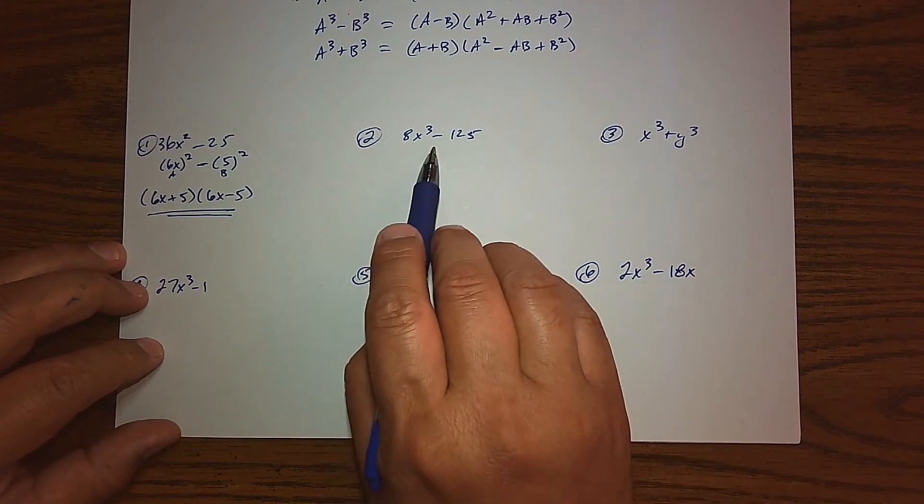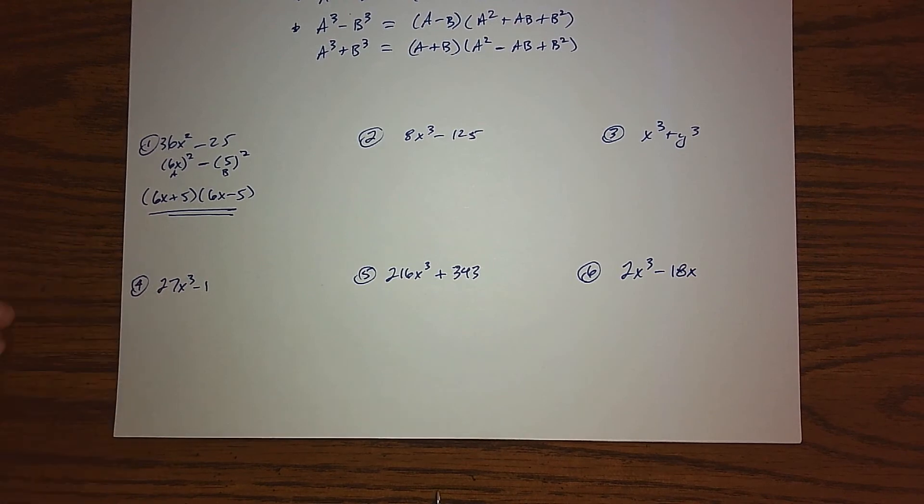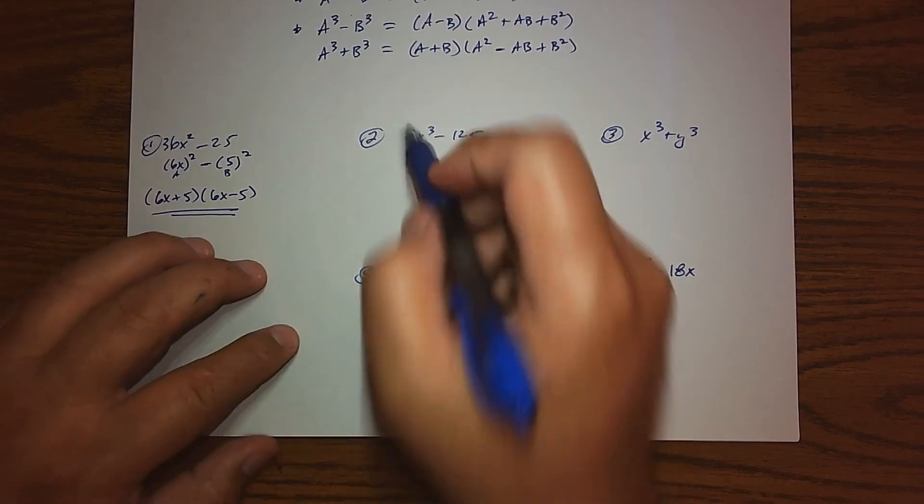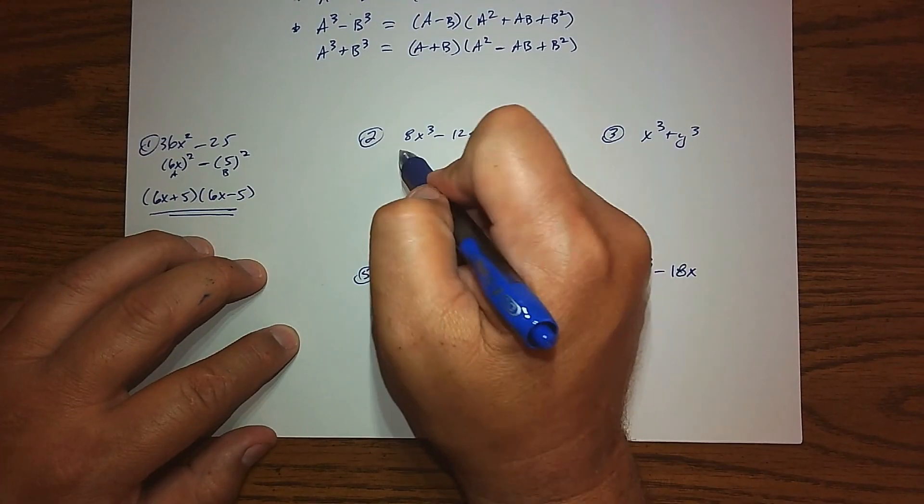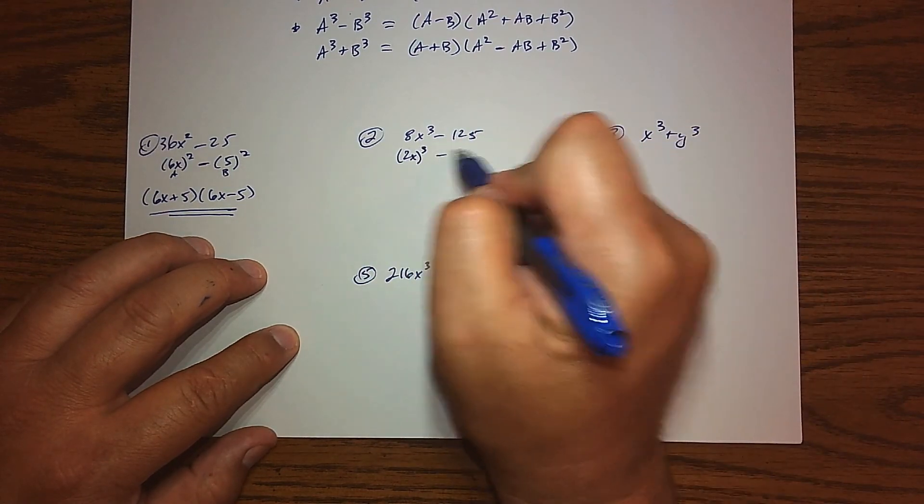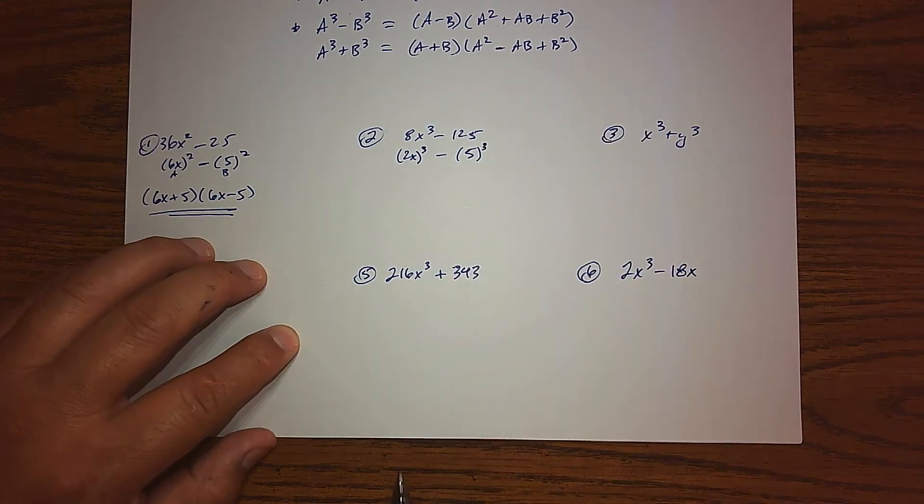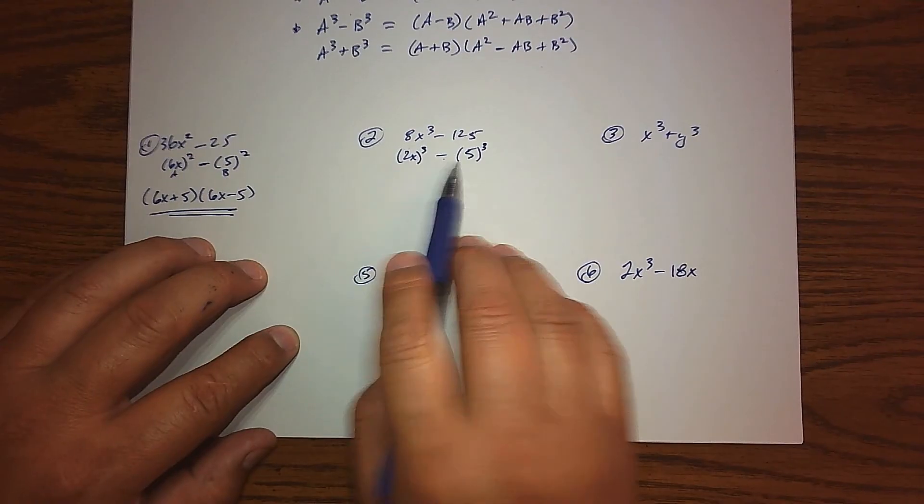Number two, I'm seeing a difference, I'm seeing a cube, so I'm thinking, okay, well that might fit the difference of cubes pattern, and we just need to make sure we have cubes. So the first one, well, that's (2x)³, and then 125 is 5³, so it's definitely the difference of two cubes.